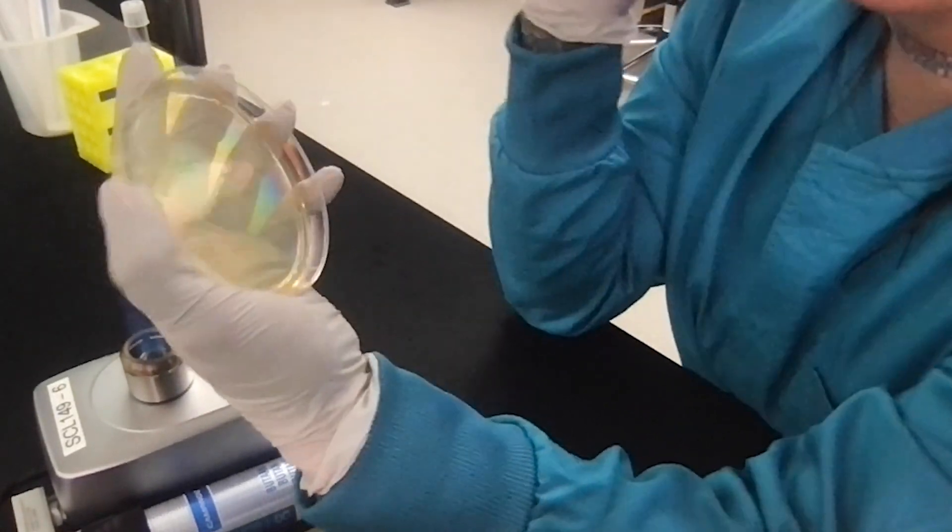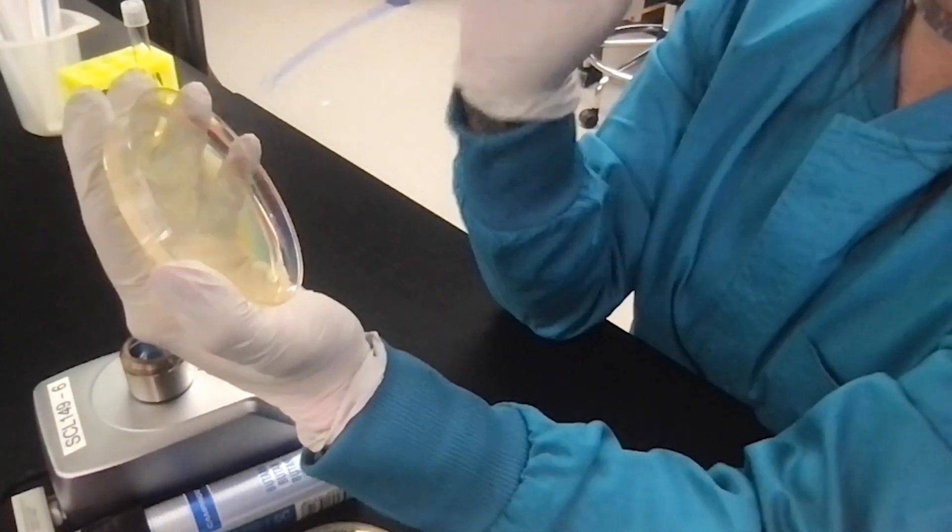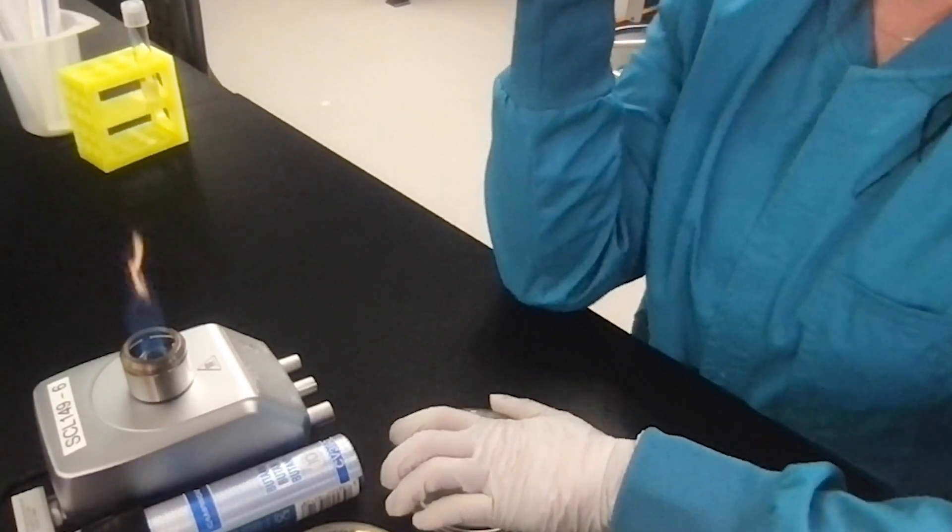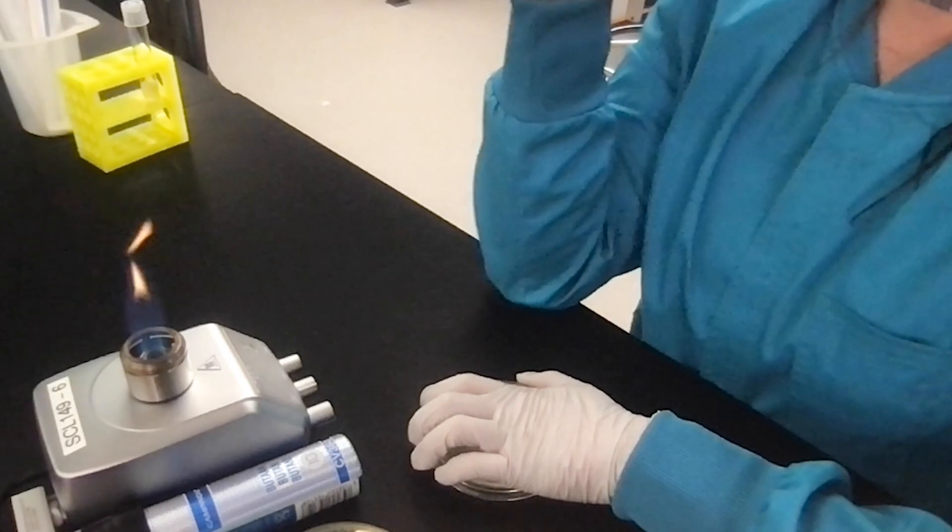But you can do this four or five times until you fill up the plate with streaks so that ultimately you have some single colonies in the center of your plate.